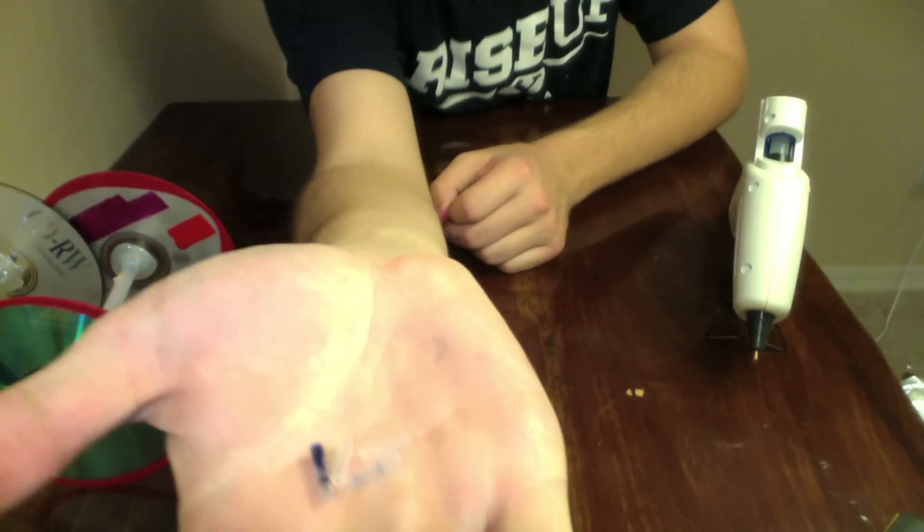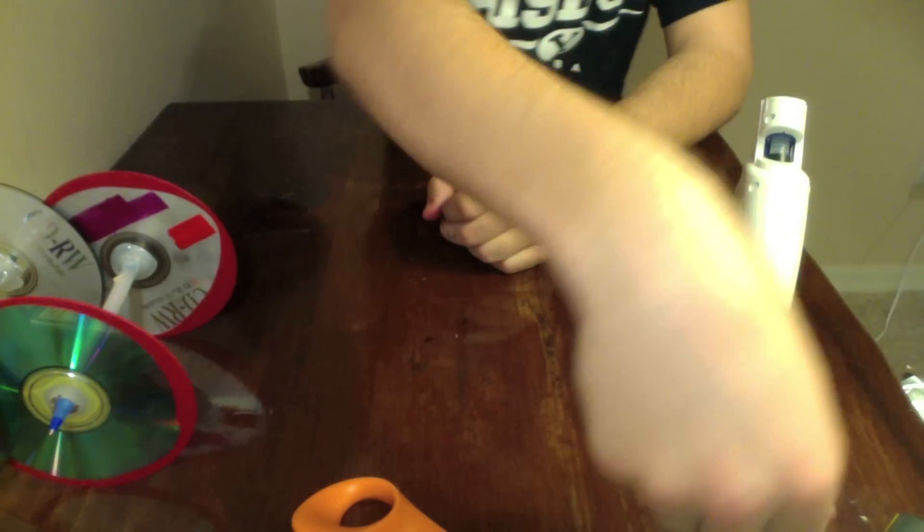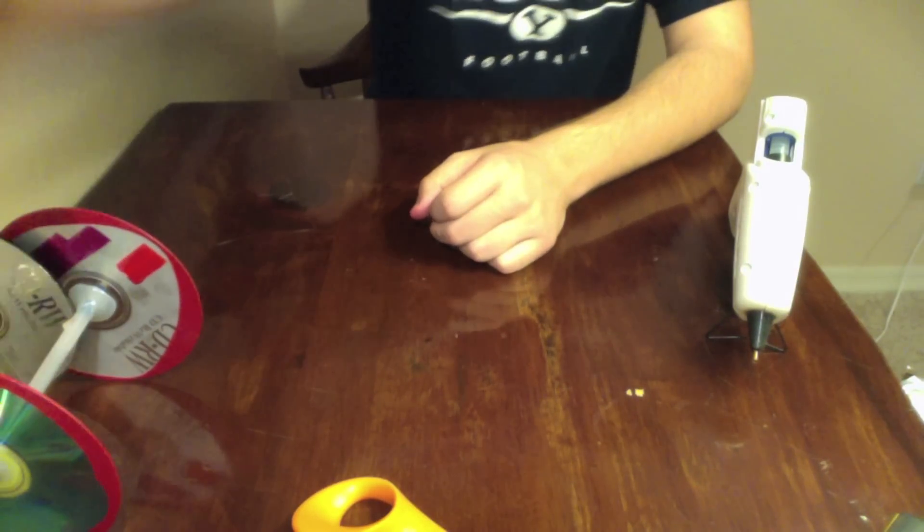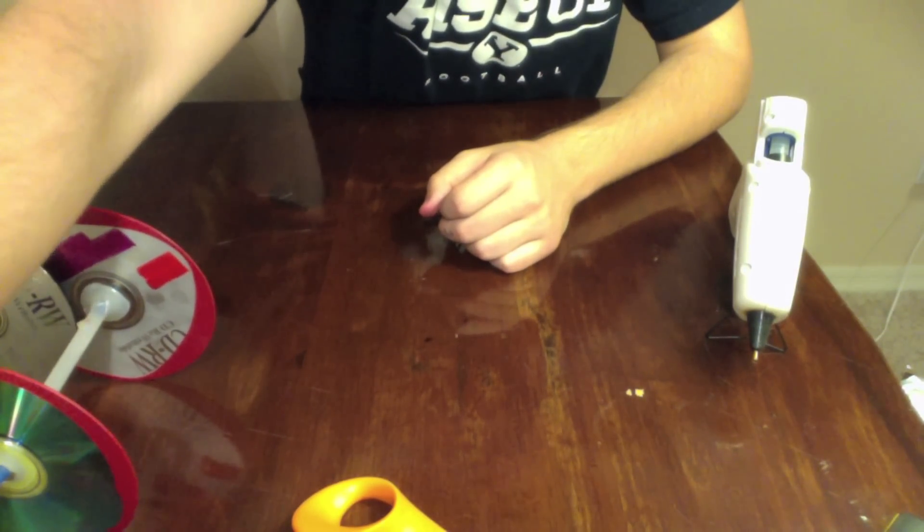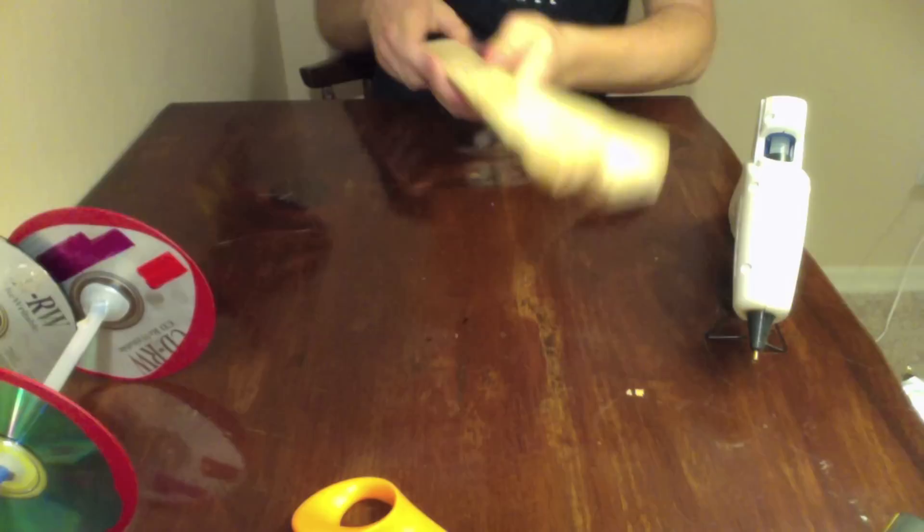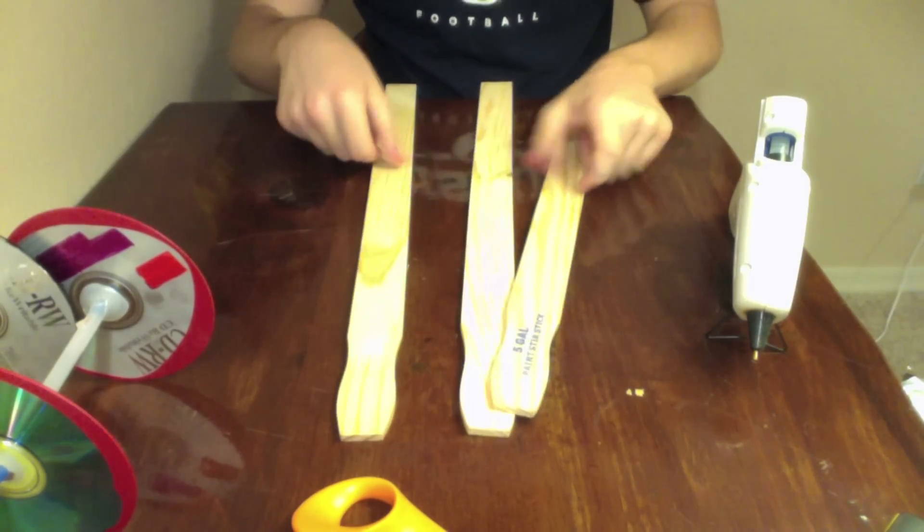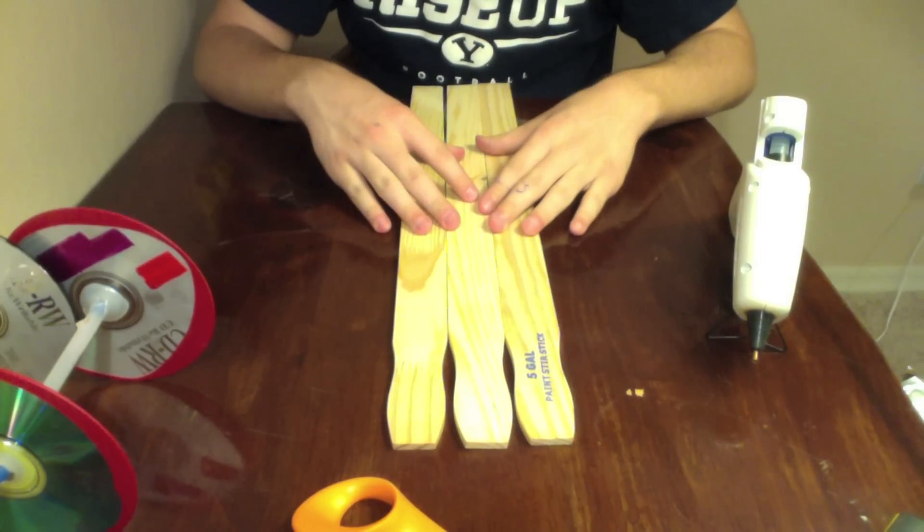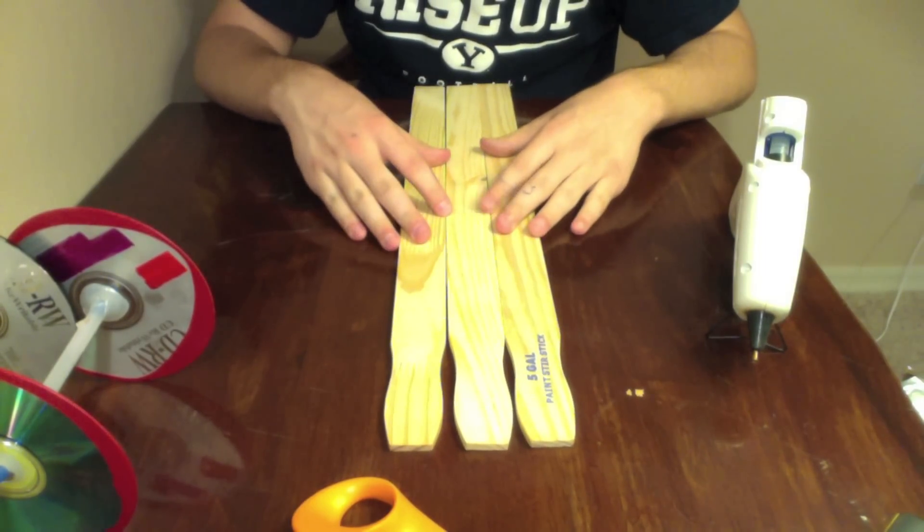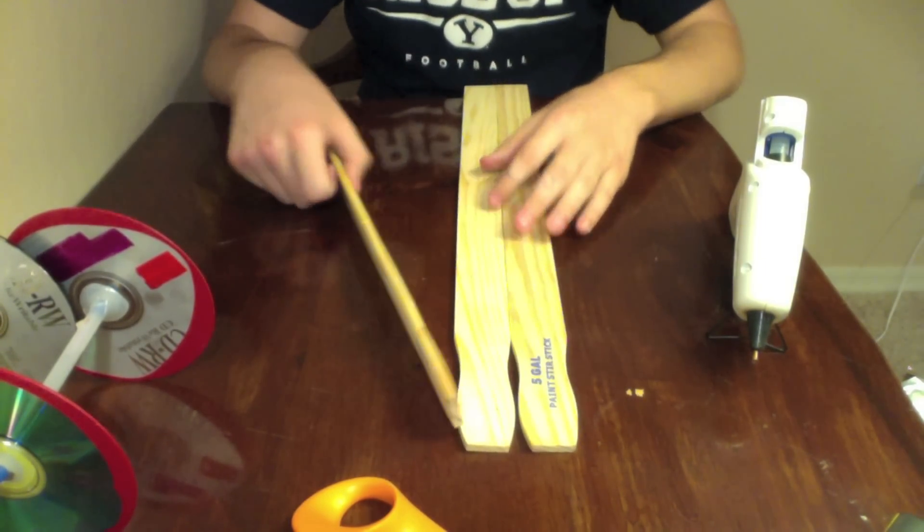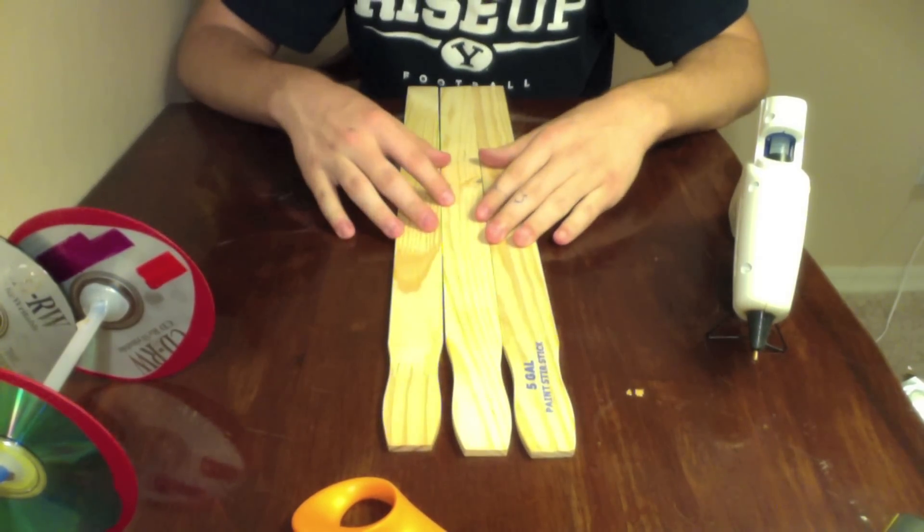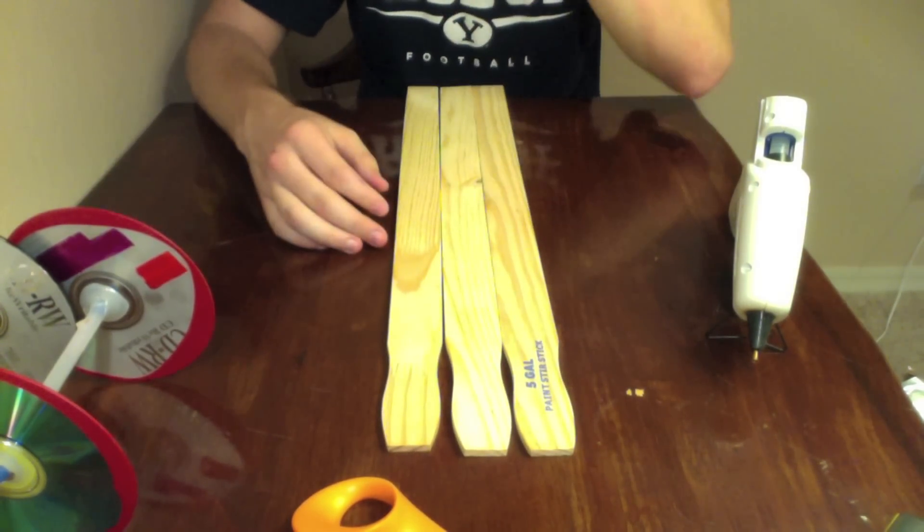So now that you've got four of these, we can set those aside for now, and we can start building the frame of the car. So we've got these paint sticks. You could use anything you want if your car's dimensions are supposed to be smaller than this. I know they make paint sticks that are smaller, or you could just cut them to be smaller. This car's really easy to adapt lengthwise.